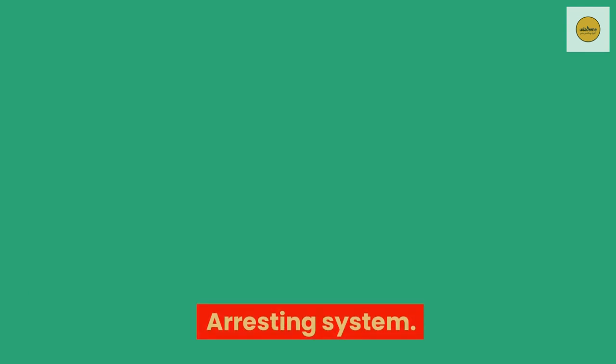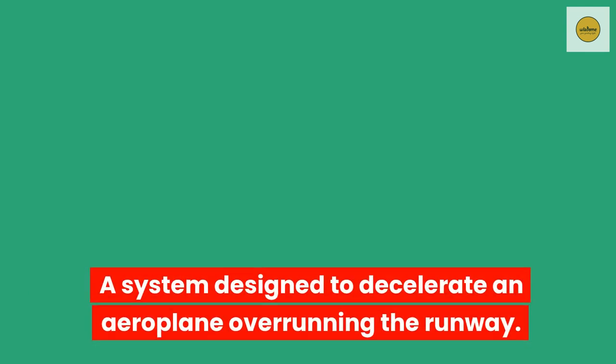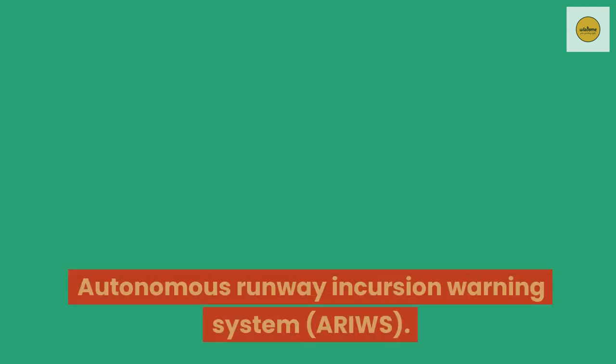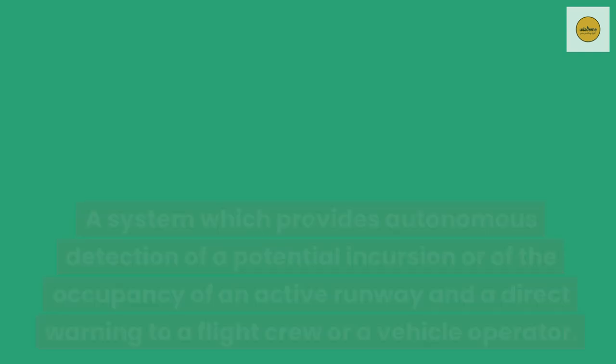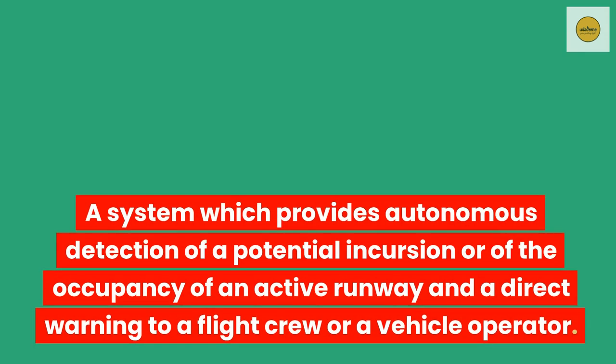Arresting system. A system designed to decelerate an aeroplane overrunning the runway. Autonomous runway incursion warning system. A system which provides autonomous detection of a potential incursion or of the occupancy of an active runway and a direct warning to a flight crew or a vehicle operator.